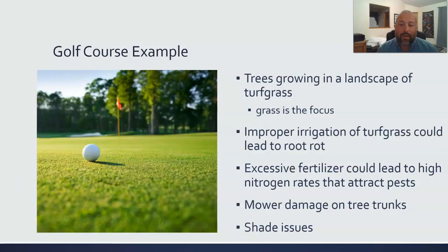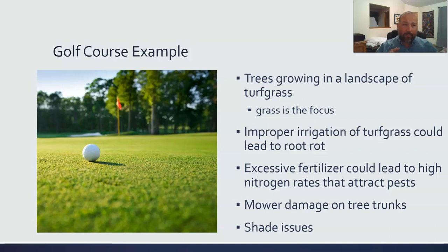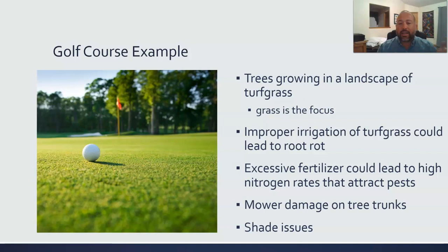The golf course example in the book is a really good one. For us as arborists, it's different than for a golf course manager — the grass is the most important part, but trees are also hugely important: they provide shade, difficulty, wildlife habitat, and aesthetic structure. There's a big difference between playing Augusta National, with its trees and tight fairways, versus a links course like St. Andrews with no trees at all.